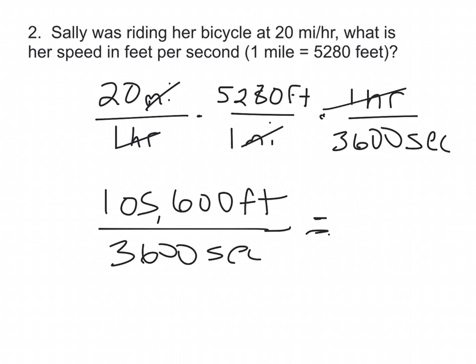Divide. We get 29.3 repeating, so I'll use a repeating bar here. Feet per second.